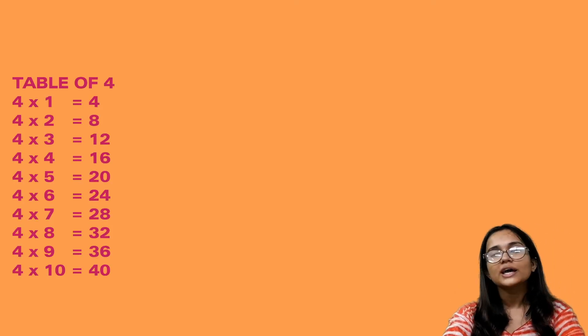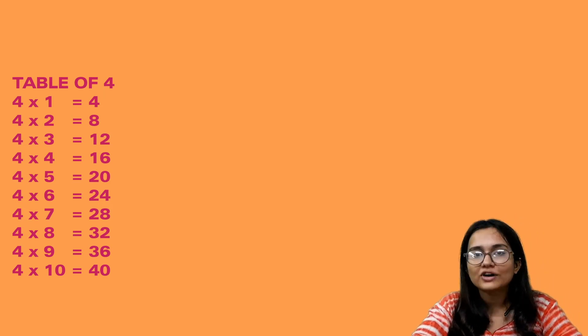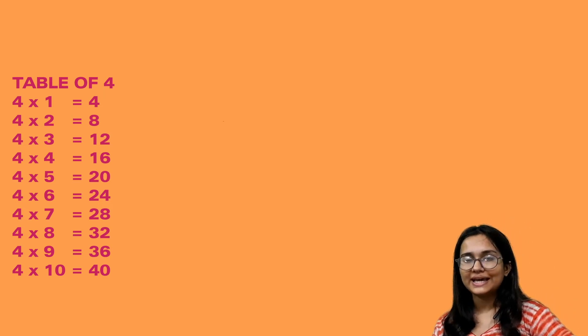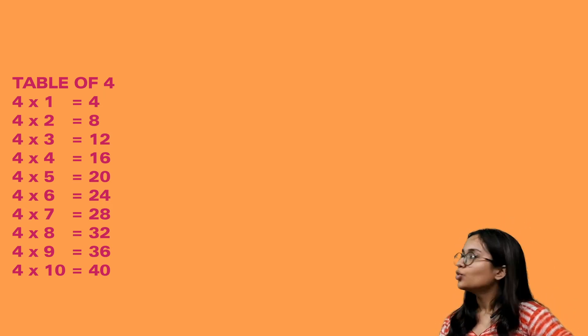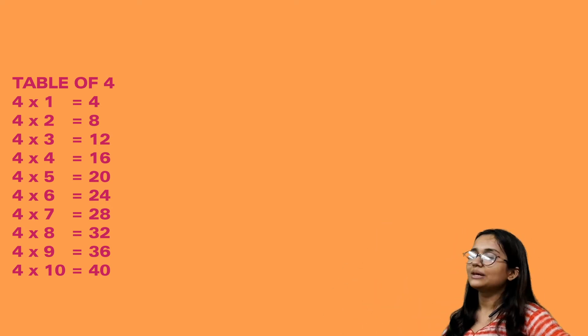Now Banti was excited and said: so we can make the table of 7 with the tables of 4 and 3 as well! So now write the table of 4 and 3. Table of 4: 4 1s are 4, 4 2s are 8, 4 3s are 12, 4 4s are 16, 4 5s are 20, 4 6s are 24, 4 7s are 28, 4 8s are 32, 4 9s are 36, and 4 10s are 40.